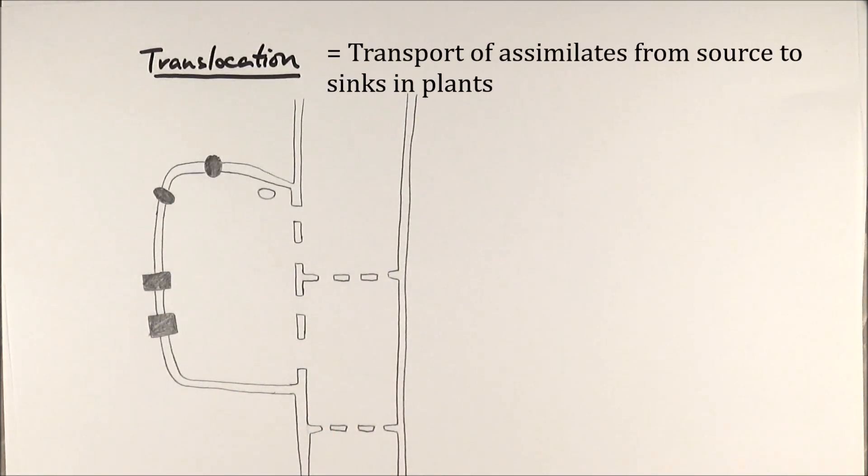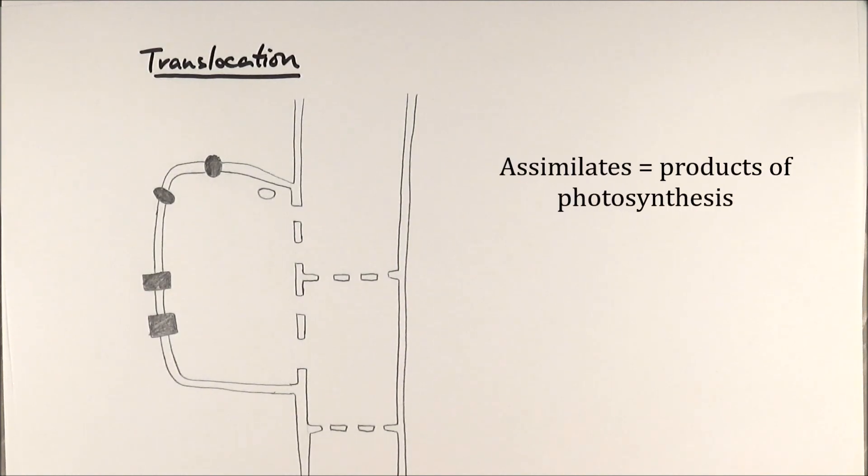Translocation is the movement or transport of assimilates around the plant. Assimilates is a term for substances made from photosynthesis - photosynthetic sugars. It's important to note that even though we make glucose in photosynthesis, glucose is actually converted to sucrose to be transported around. So it's mainly sucrose rather than glucose.